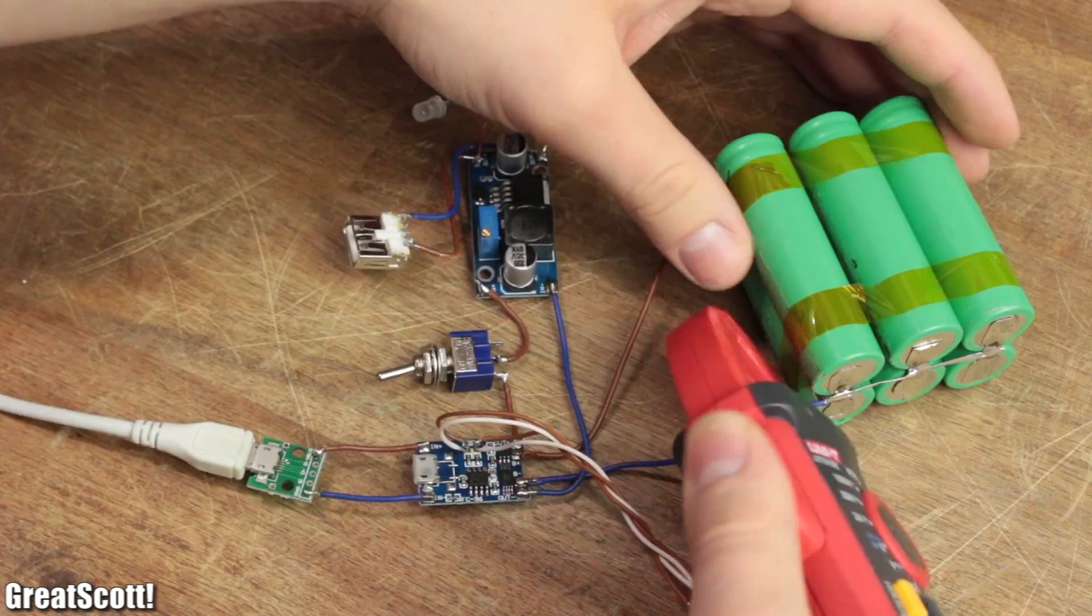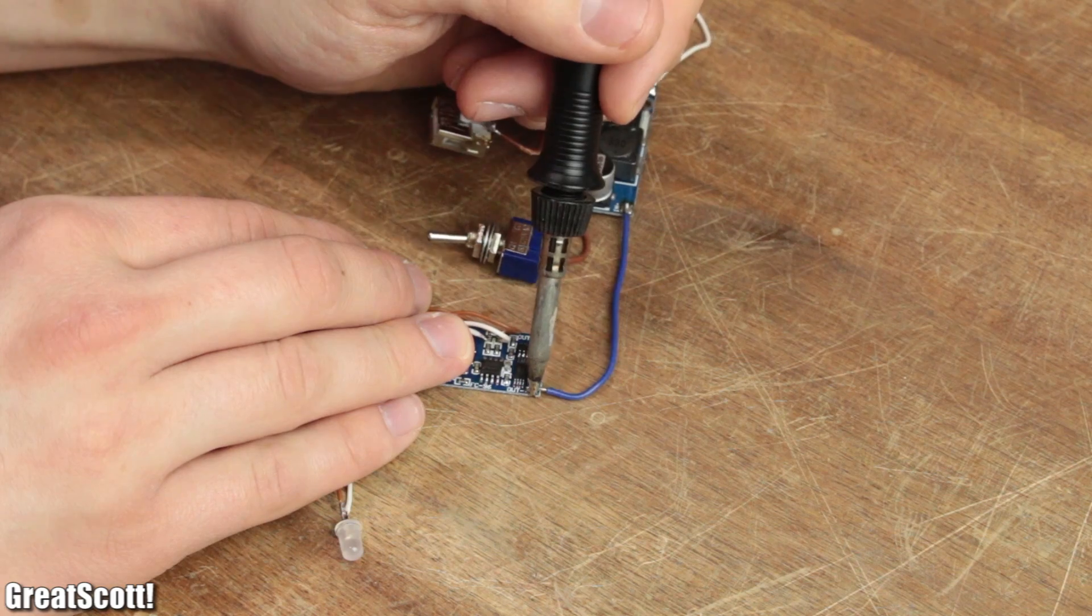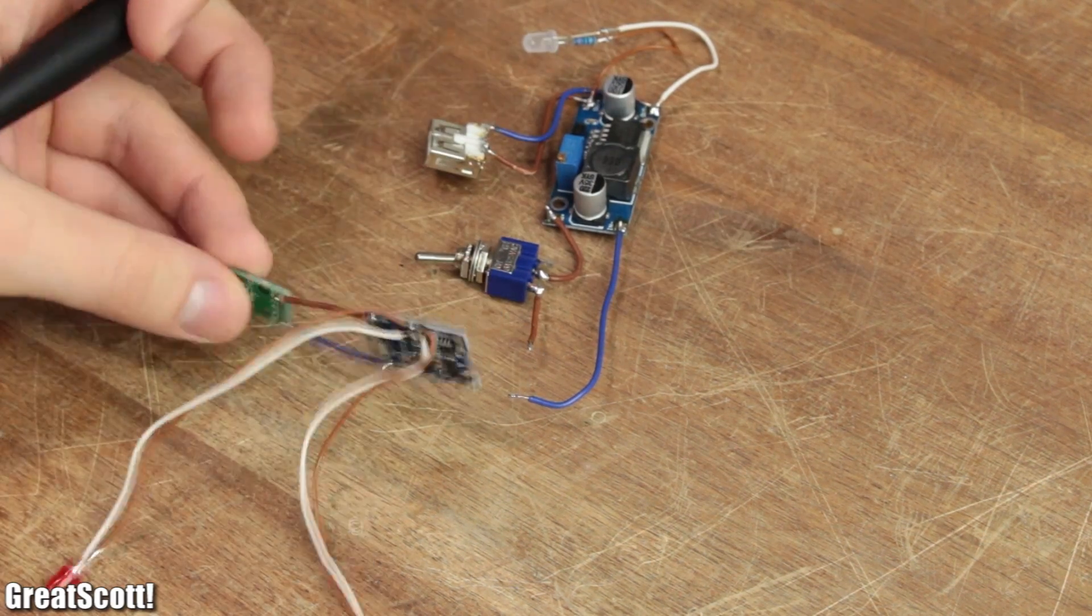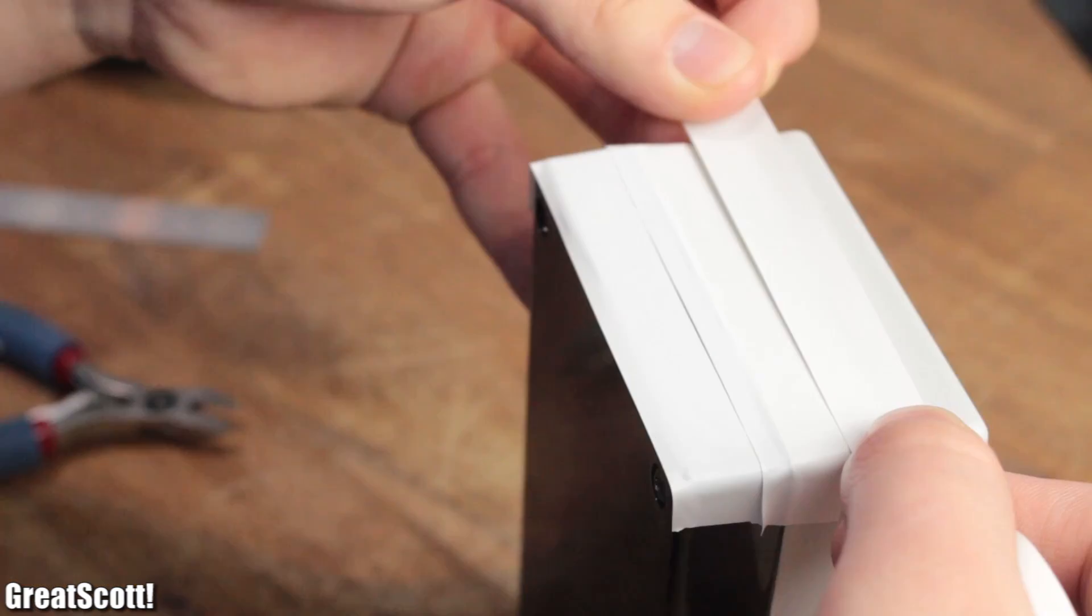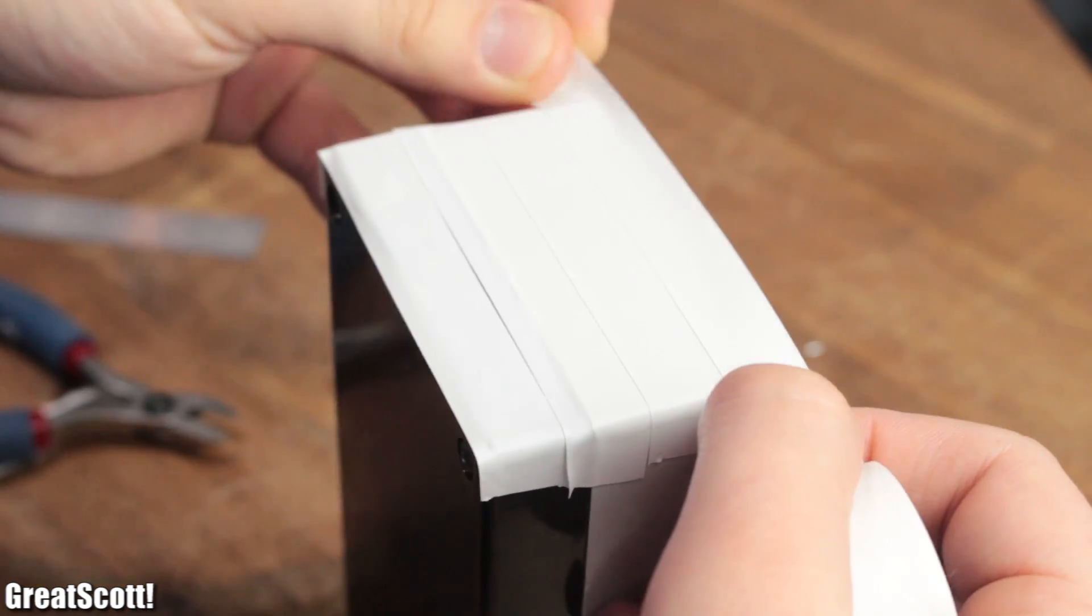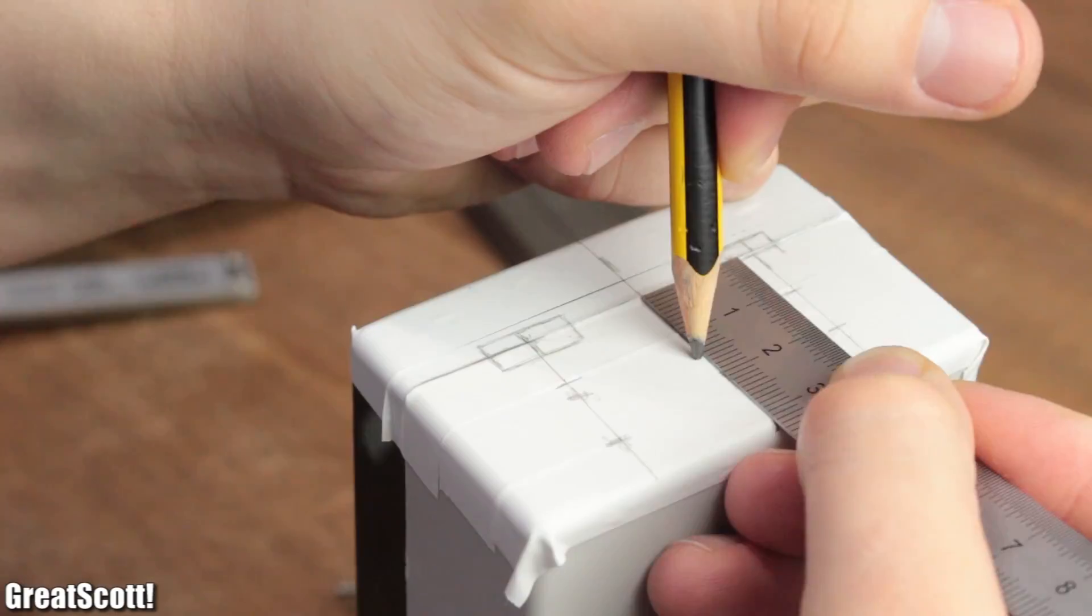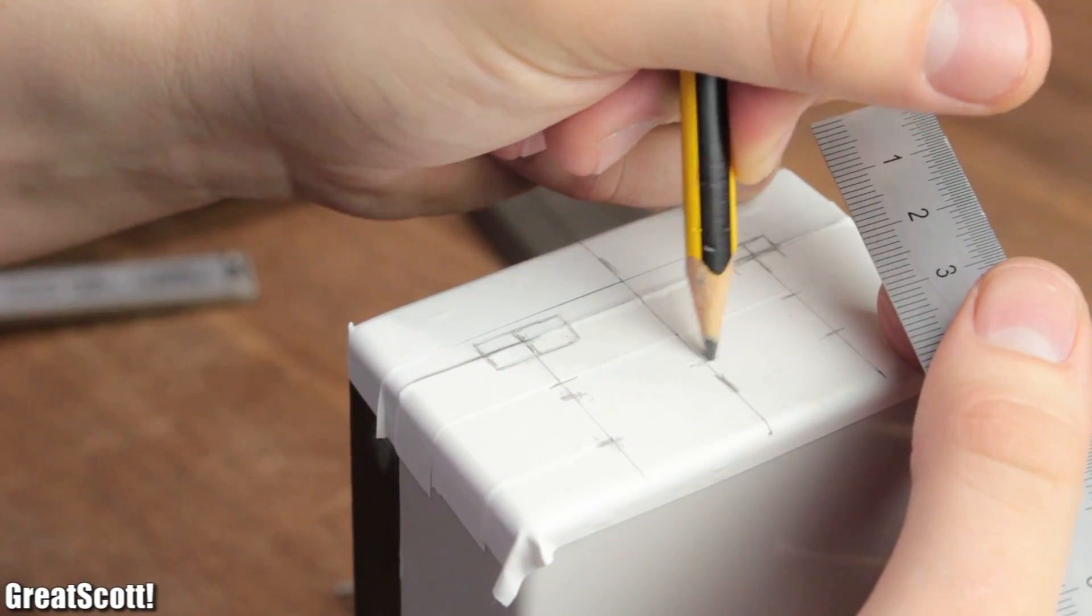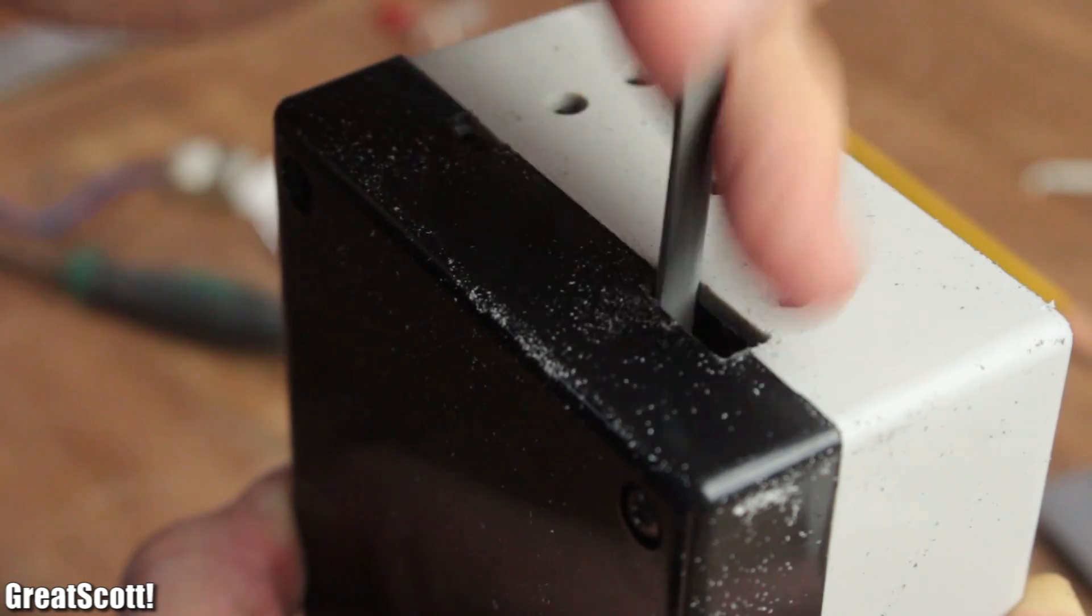Once I was sure this constellation of parts worked the way it was supposed to, I used my soldering iron once again to tore it all apart because it was time to house it all in a decent case. For that I used electrical tape to cover the front in order to mark the position for the USB ports, the LEDs, and the switch. Then I simply used my drill to create the holes and used the file to create the rectangle cutouts.